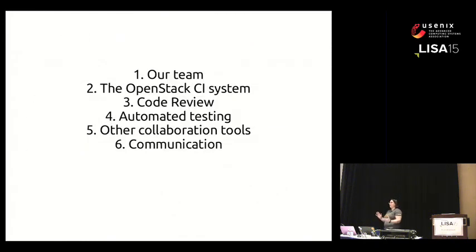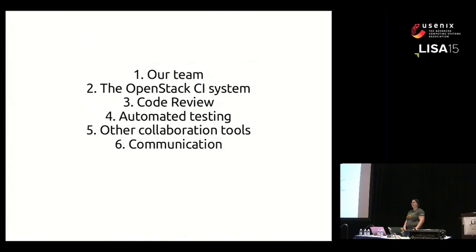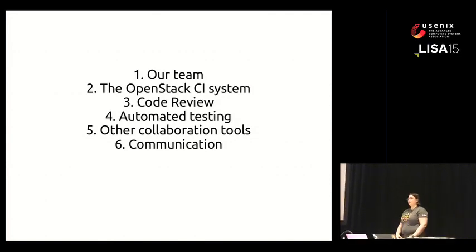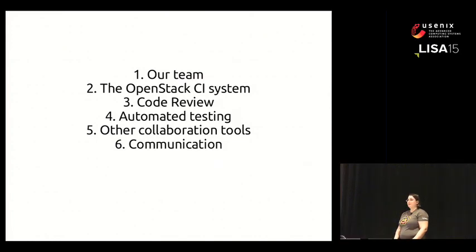A quick overview of the talk: I'm going to introduce our team and what we do, then talk about the OpenStack continuous integration system. I'll explain everything you need to know about OpenStack to understand our CI system, which is not very much. Then I'll cover code review, automated testing, collaborative tools, and communication methods. I really wanted to focus on the soft skills and ways we collaborate and communicate as a distributed team.